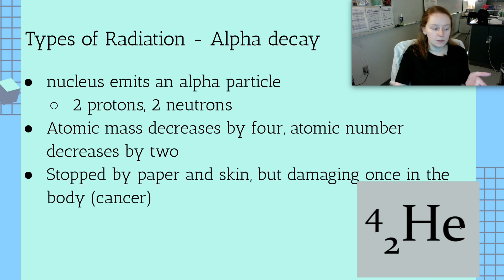When we have alpha decay, it's actually stopped by paper or skin, so if you have alpha decay and it's hitting your arm, it's not going to go through your skin. But if you inhale alpha particles, it can be damaging once it's inside your body and cause cancer. The way that radiation causes cancer is this right here. It's a nucleus, but it doesn't have any electrons, and two protons all by themselves with their two neutrons, they really want electrons, and so they'll rip electrons off of anything, including your DNA, and that's where we get issues like cancer from radiation.